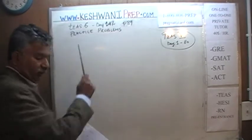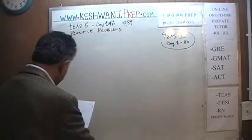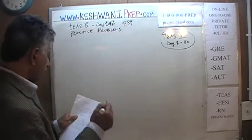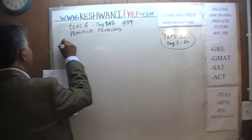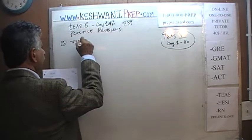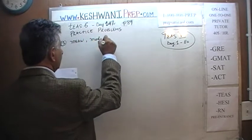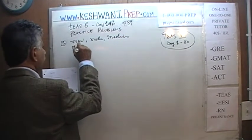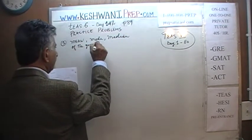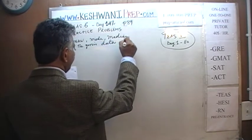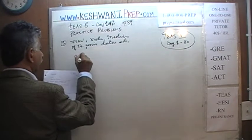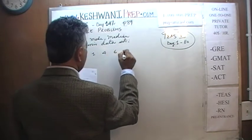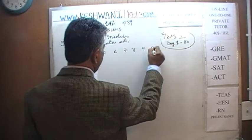The very first problem asks us to find the mean, the median, and the mode of the given data set. The data set goes like this: 0, 1, 1, 4, 6, 7, 8, 9, and 9.